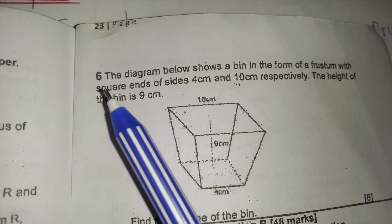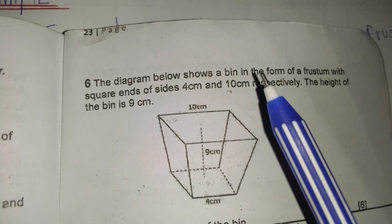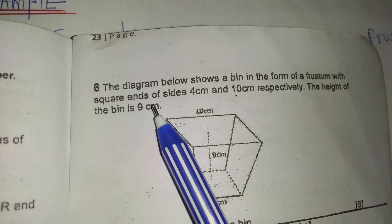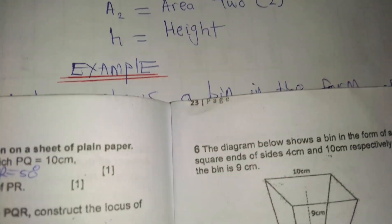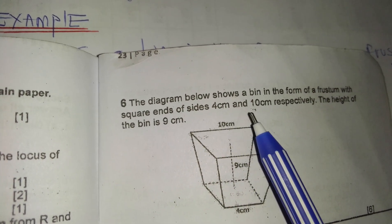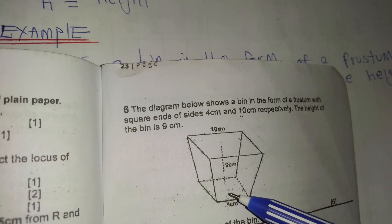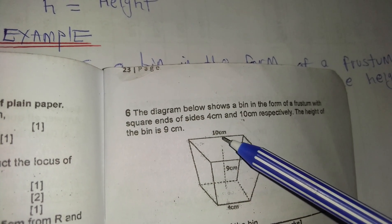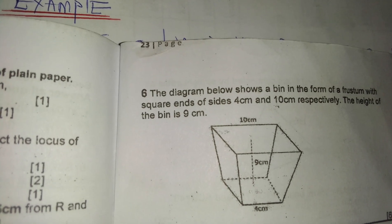So I have this question. The question says: the diagram below shows a beam in the form of a frustum with square ends. Remember, we are dealing with the square-based pyramid. They are saying square ends of sides 4 centimeters and 10 centimeters respectively. The height of the bin is 9 centimeters — from this point up to the far end, from the center of the base up to the top.